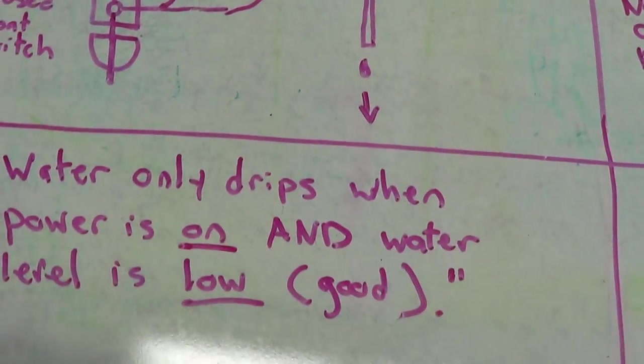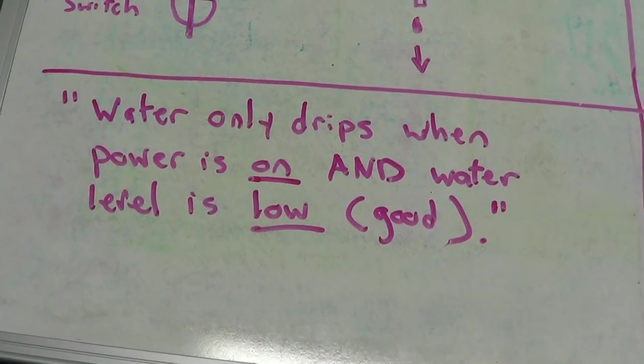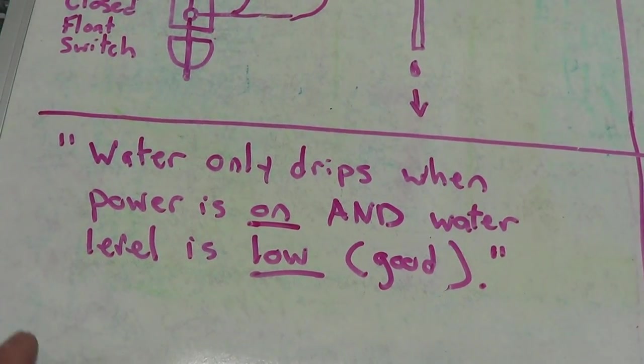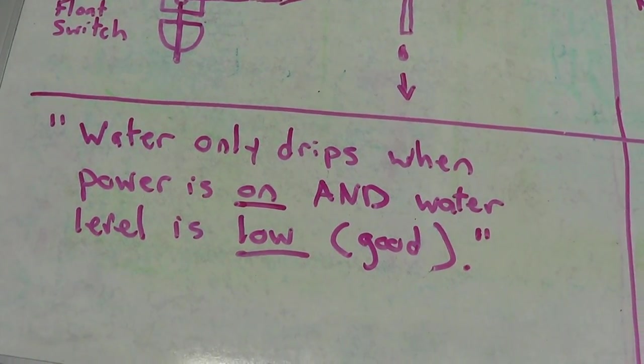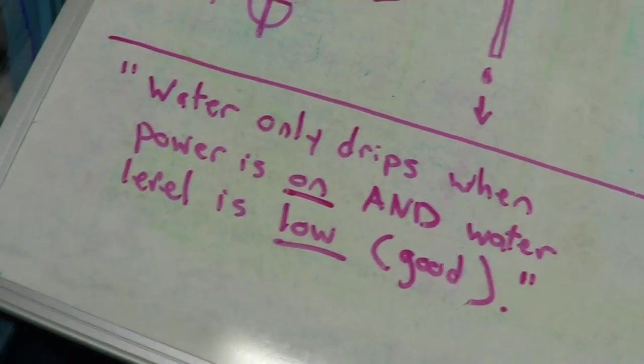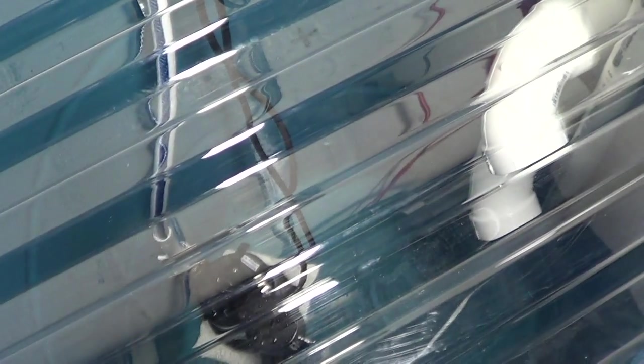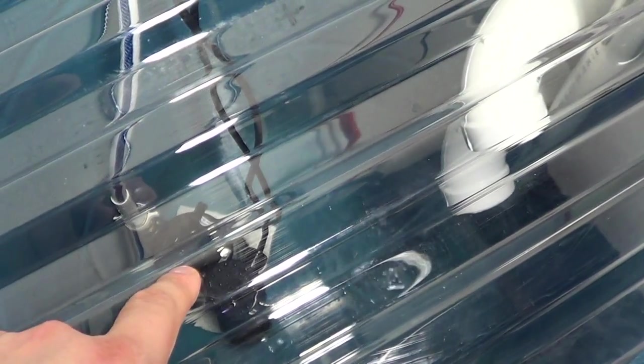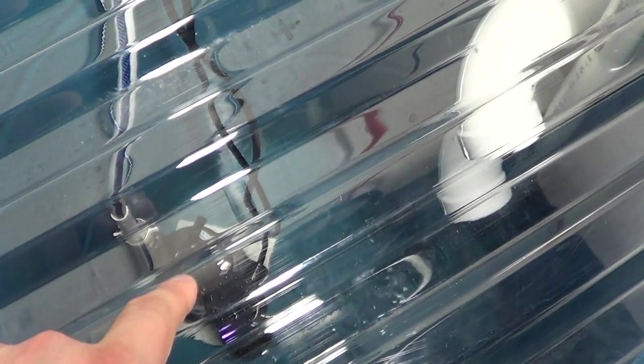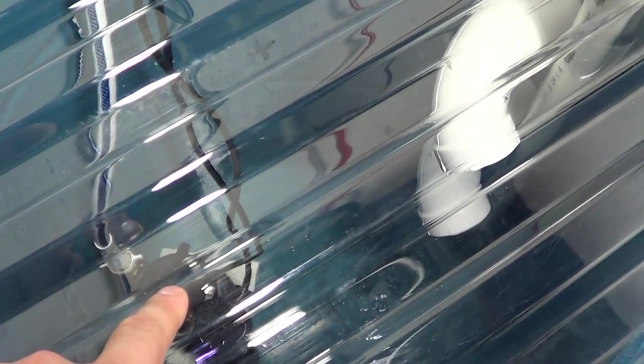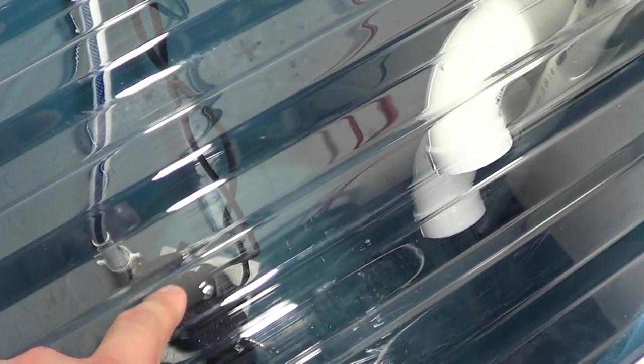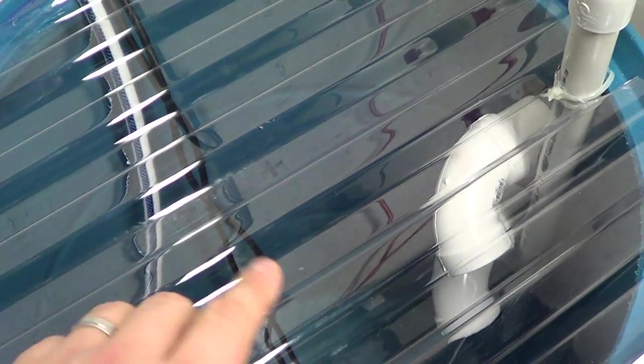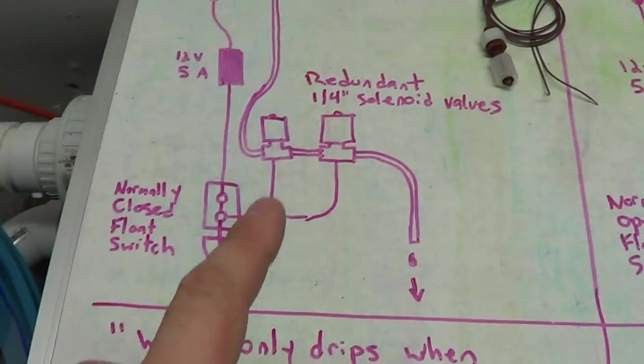So this is the statement which kind of summarizes that diagram that we just looked at: water will only drip when the power is on and when the water level is low. And the water level being low is a good thing because it's going to be in this barrel here, and the primary line of defense is going to be that float activated sump pump. So the water level should stay low in this barrel unless that pump fails for whatever reason. And the water level gets higher in this barrel for whatever reason, this drip line will shut off.